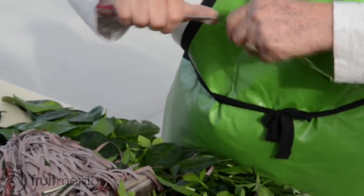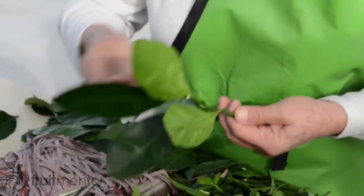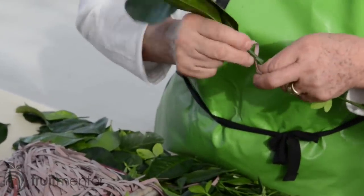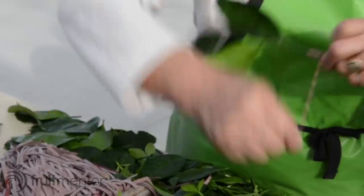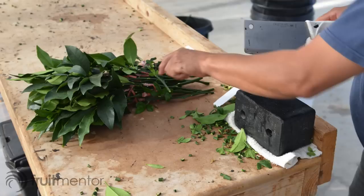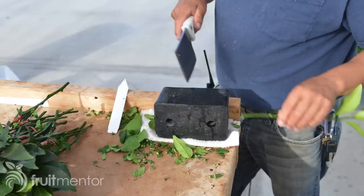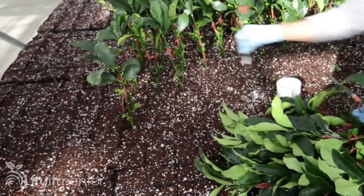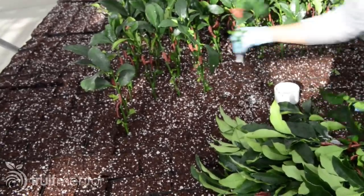A whip graft is used to connect the rootstock to the scion. A rubber band is used to hold the scion and rootstock closely together while the graft heals. Next, the bottom of the rootstock is chopped off. Then the grafted cuttings are dipped in a powdered rooting hormone and planted in a rooting medium.